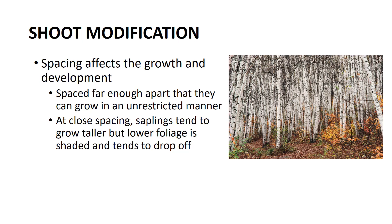If they are spaced too closely or allowed to remain too long in high-density plantings, they will become malformed and may be unstable for many markets. With sapling trees, whether grown in the field or in containers, there is a tendency to overlook the importance of spacing. At close spacing, the saplings tend to grow taller, but the lower foliage is shaded and tends to drop off.